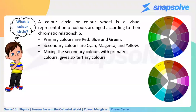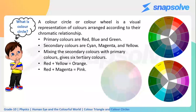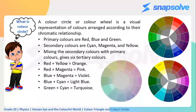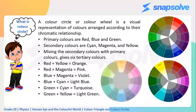When we mix secondary colors with primary colors, we get tertiary colors. In physics, there are six tertiary colors: red and yellow gives orange; red and magenta gives pink; blue and magenta gives violet; blue and cyan gives light blue; green and cyan gives turquoise; and green and yellow gives light green.